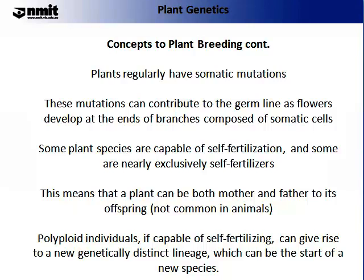Another concept to familiarise yourself with is that plants regularly have somatic mutations. These mutations can contribute to the germline as flowers develop at the end of branches composed of somatic cells. Some plant species are capable of self-fertilisation, and some are nearly exclusively self-fertilisers.